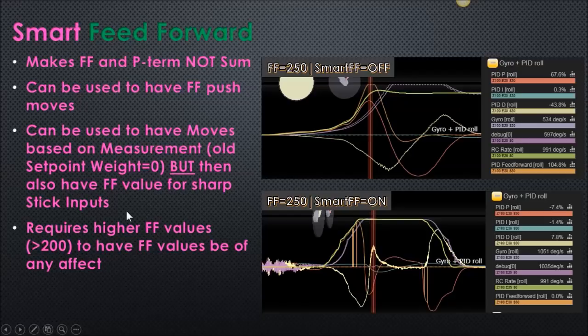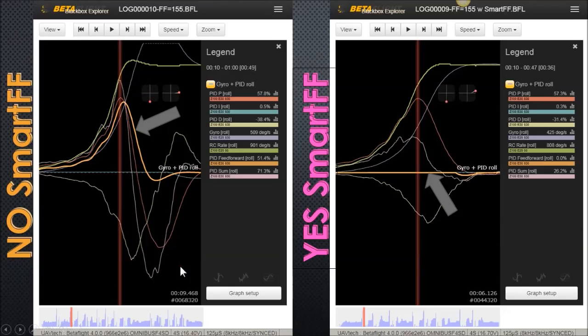And last thing, if you are using smart feedforward, if you have it turned on, you have to have higher feedforward values. Am I testing anything above 200? Even 200 might not, this is 250 and it's barely, it's only a couple little spots here in a sharp roll move that feedforward actually came into play. And it's basically producing the same thing as the P-term. So you're looking at pretty high feedforward values for it to do anything. So here's another example, just a normal move.